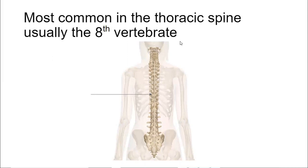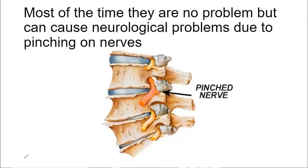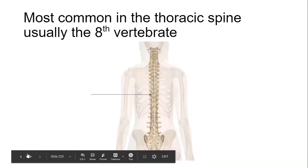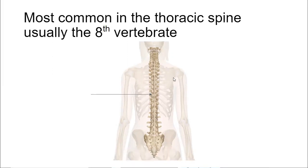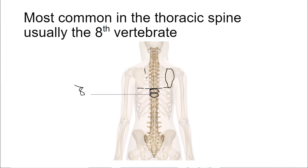Hemivertebrae normally affect the eighth thoracic vertebra. To give you an idea of where that is: the bottom of your shoulder blades usually lines up with about T7, so the eighth thoracic vertebra would be right below that. That should help you locate where these typically occur.